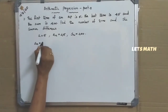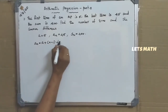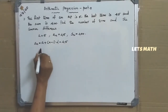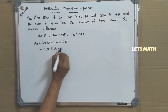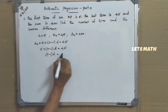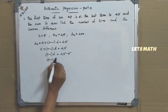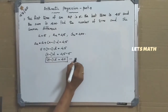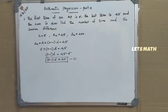We start with AN equal to A plus N minus 1 into D. We know that it is given as 45. So A is given as 5: 5 plus N minus 1 into D equal to 45, giving N minus 1 into D equal to 40. Let this be equation number 1. Here N is unknown and D is also unknown.